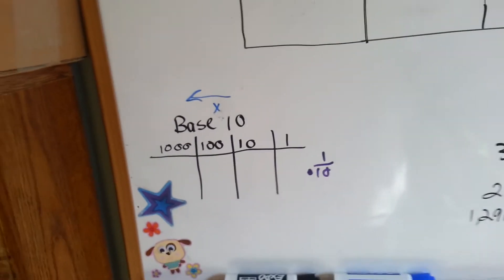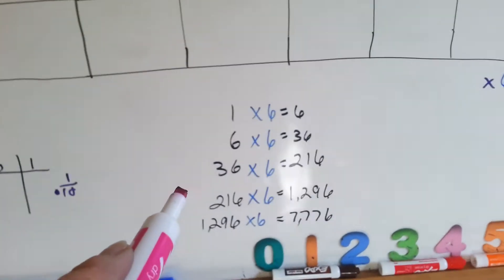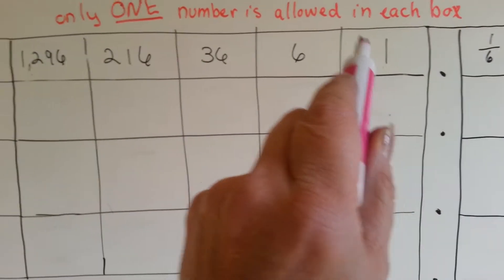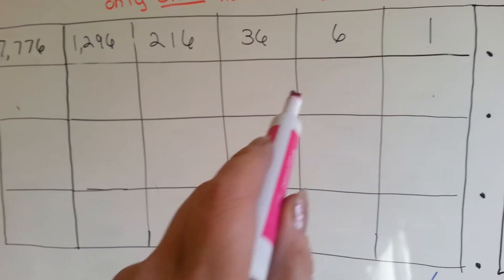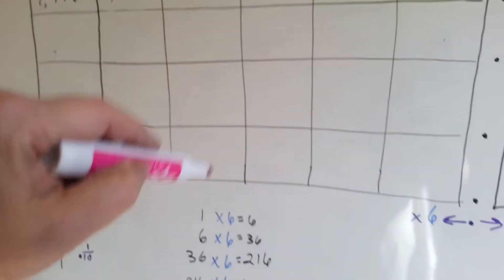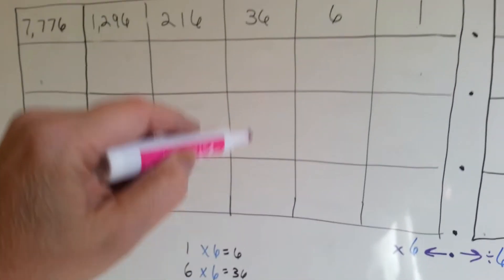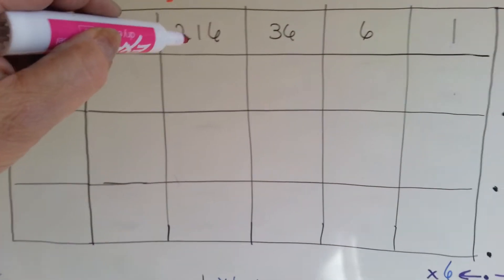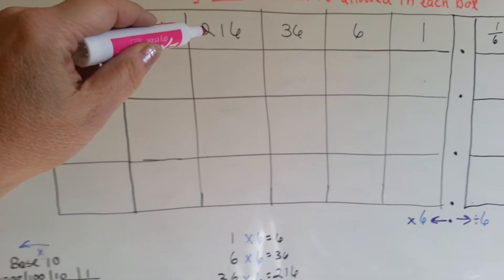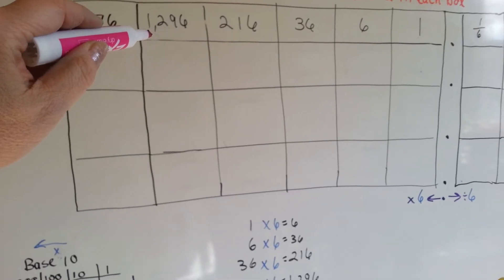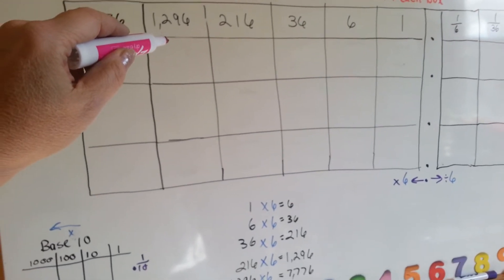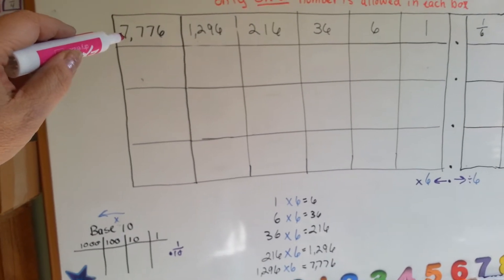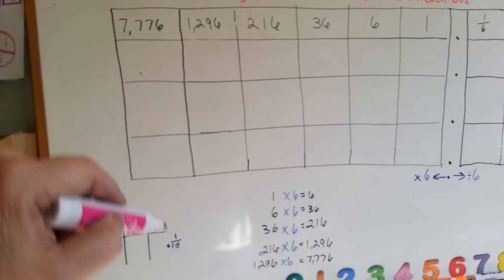Well, in base 6, we multiply by 6. 1 times 6 is 6, so we have our ones column, then we have our 6 column. 6 times 6 is 36, 36 times 6 is 216, 216 times 6 is 7,776.